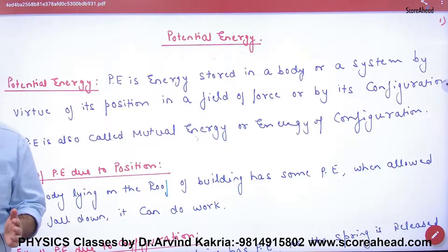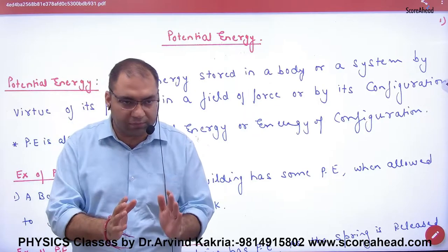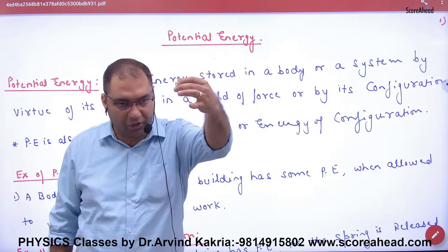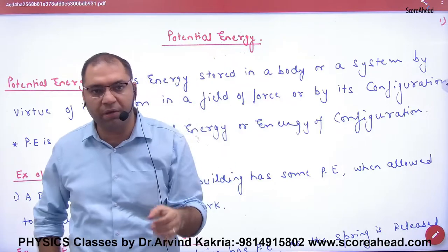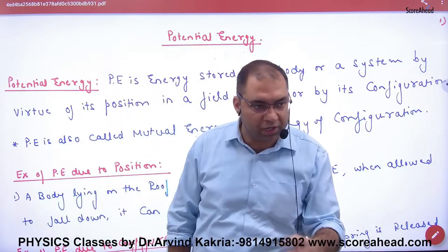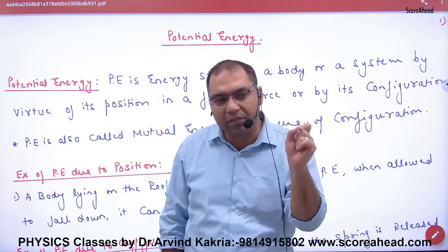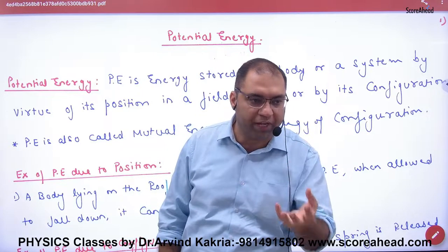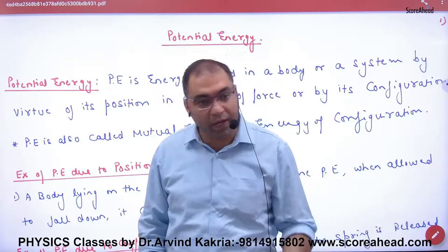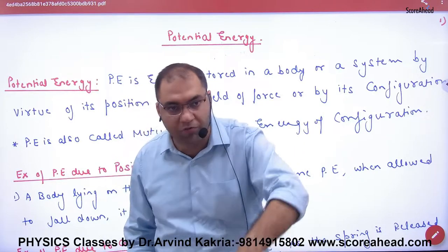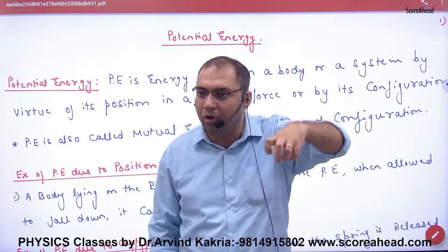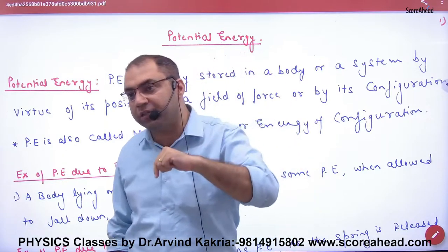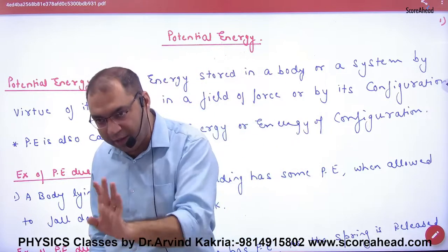Now let's move on. Potential energy has two types. The first type is gravitational potential energy. When we talk about gravitational potential energy, this means that gravity's force acts on the object, and the work done against gravity is stored as potential energy.